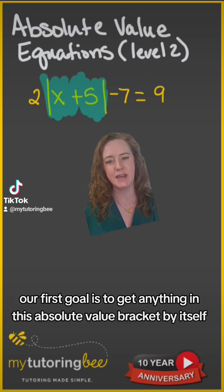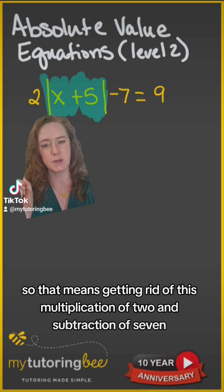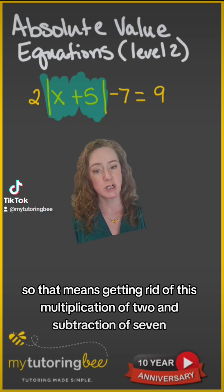Our first goal is to get anything in this absolute value bracket by itself. We're going to isolate that absolute value. So that means getting rid of this multiplication of two and subtraction of seven.